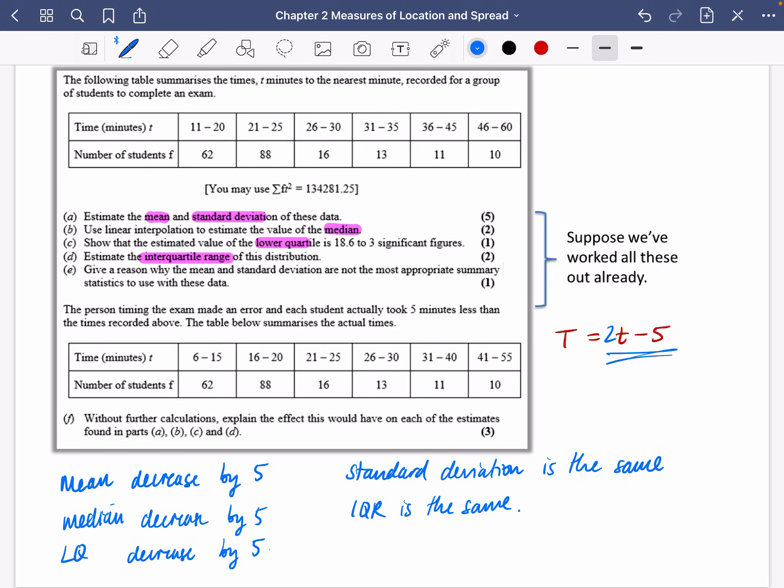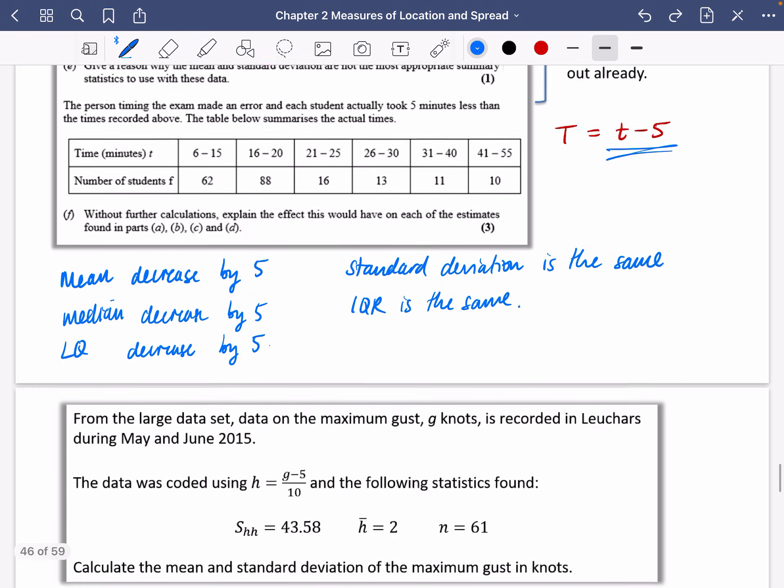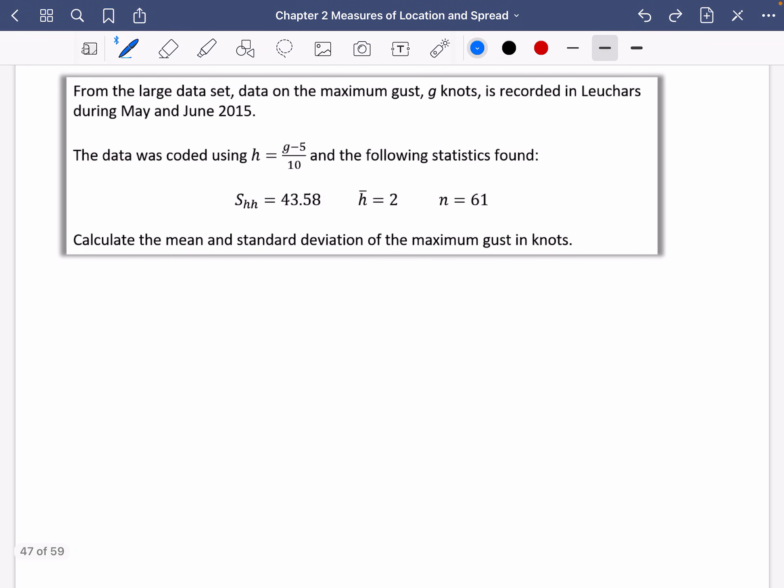Obviously, if there was something in front of the T, these ones would change. But there wasn't. Okay, so it says here from the large data set, data on the maximum gust, G knots, is recorded in LUCAS during May and June 2015.